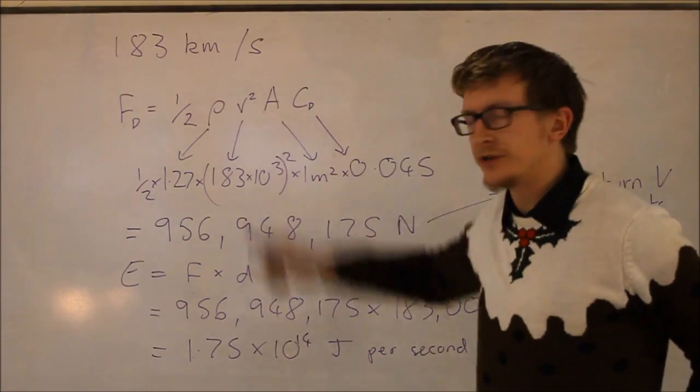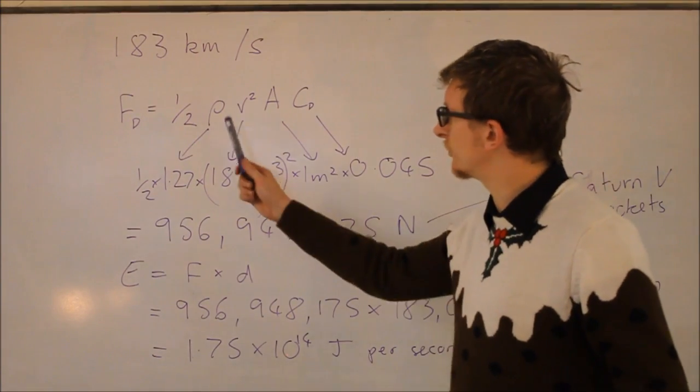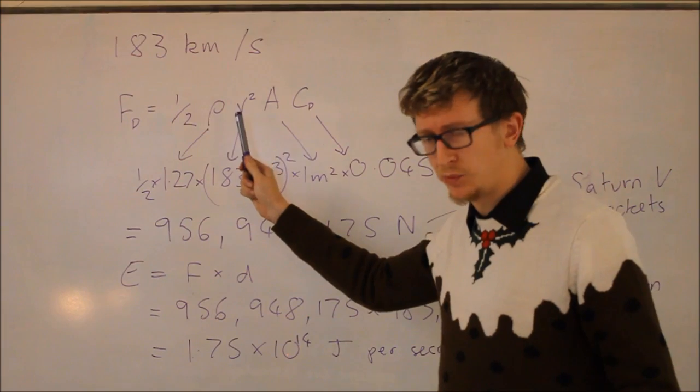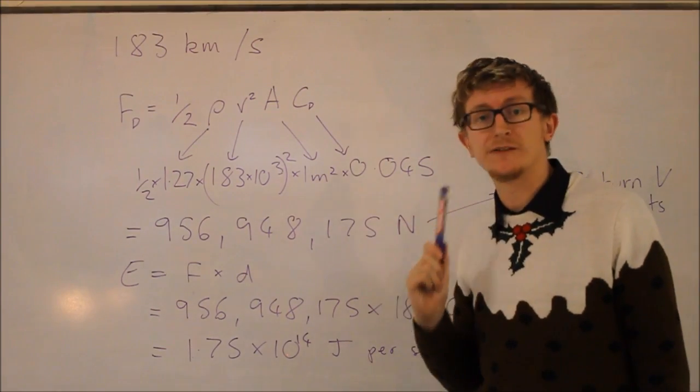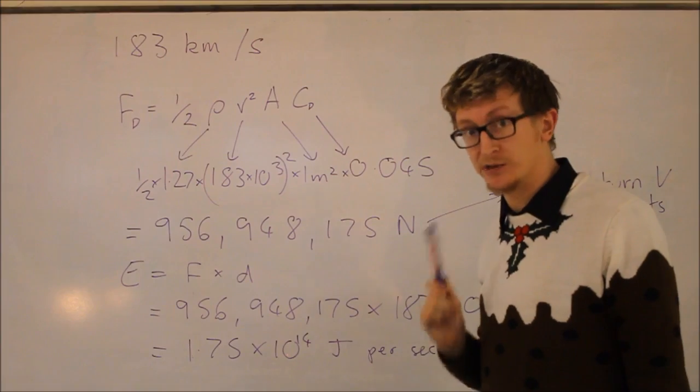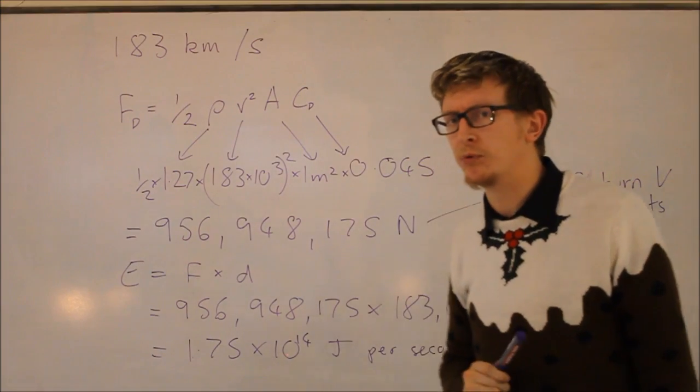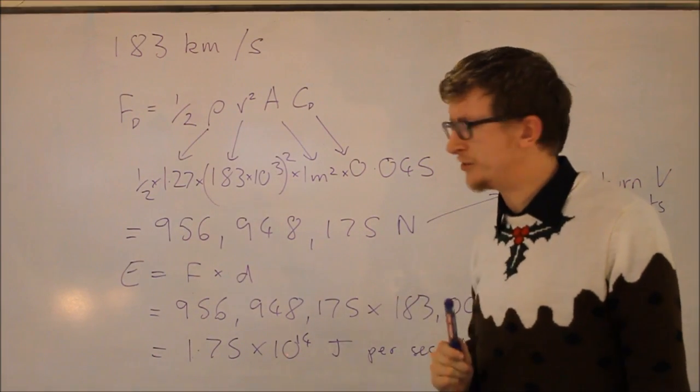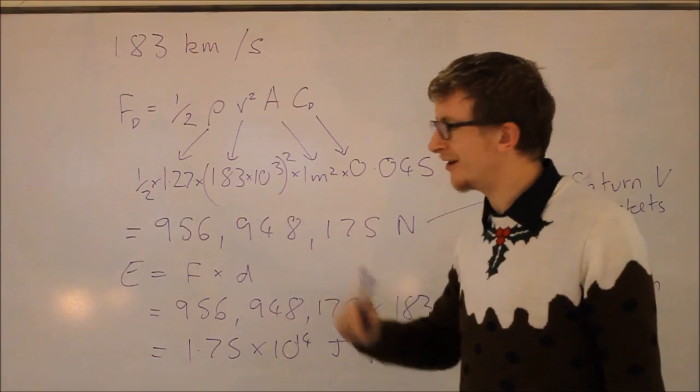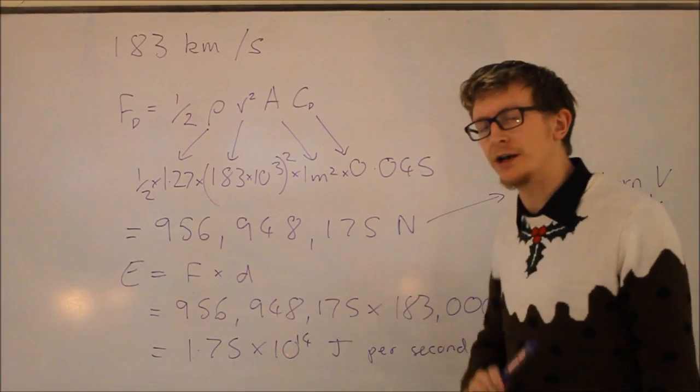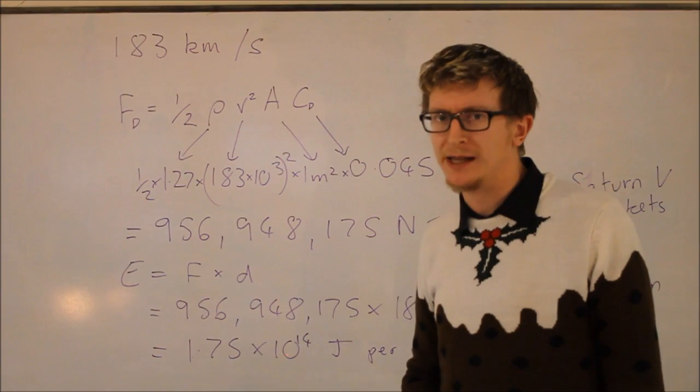Now if Santa was travelling at 183 km per second through the Earth's atmosphere, the drag force purely from air resistance is equal to 1.5 times the density of air times the velocity squared times the cross-sectional area of the sleigh times the drag coefficient of the sleigh. I have assumed the drag coefficient of the sleigh is very low, the area of the sleigh is 1 meter squared, the velocity is 183 km per second, and the density of air is 1.27 kg per meters cubed. This results in a force needed to propel Santa through the atmosphere of 956,948,175 newtons, or approximately equal to 141 Saturn V rockets that propelled man towards the moon.